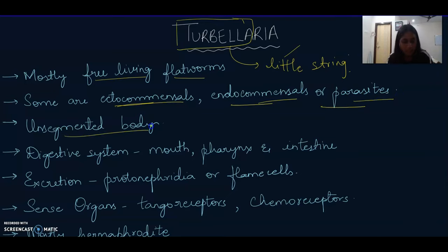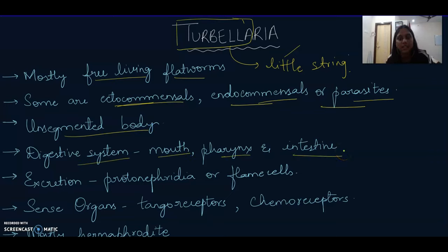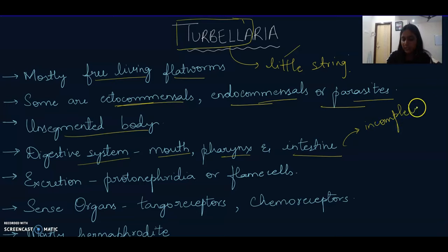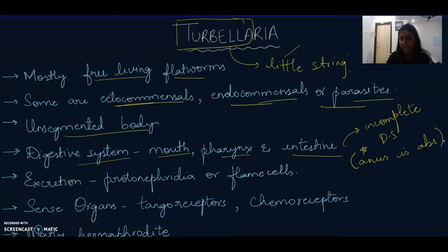Their body is unsegmented, meaning segments are absent. The digestive system has a mouth, pharynx, and intestine, which means they have an incomplete digestive system. Importantly, the anus is absent.